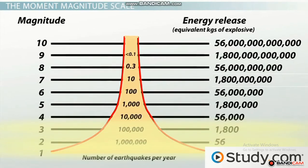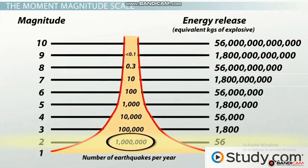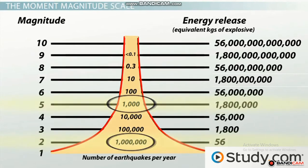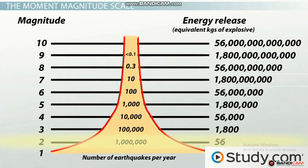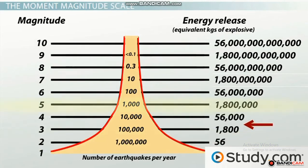About one million magnitude two earthquakes occur each year, compared with only about a thousand magnitude five quakes. Magnitude ten earthquakes are extremely rare, occurring less than once a year. Considering that the energy release of a magnitude two quake is equal to about 50 kilograms of explosives, while a magnitude five releases energy equivalent to one million eight hundred thousand kilograms, we should be very thankful that they are so infrequent.